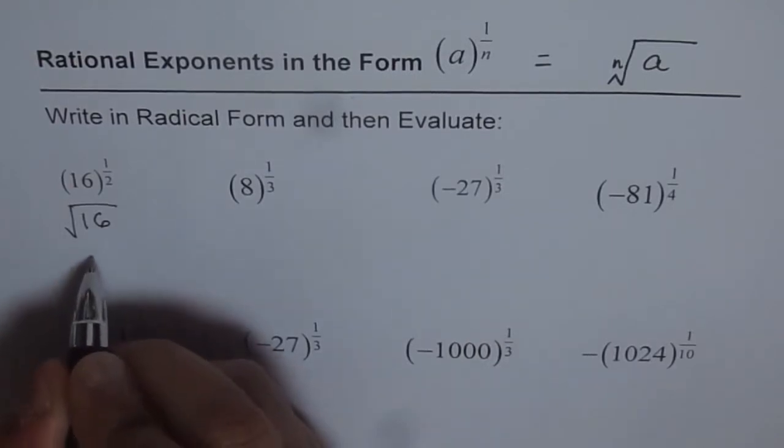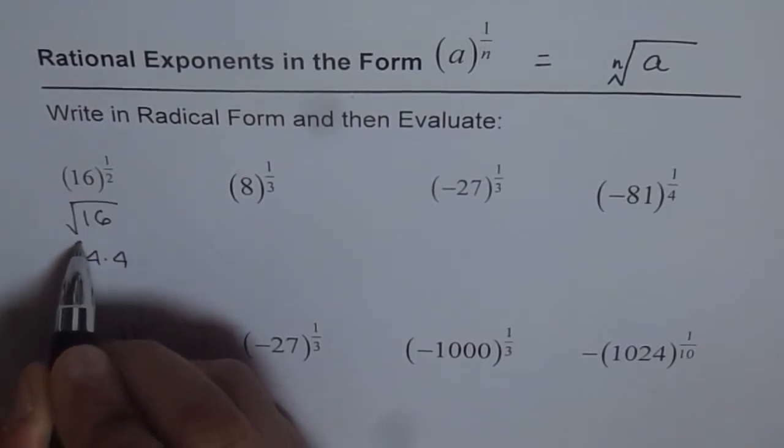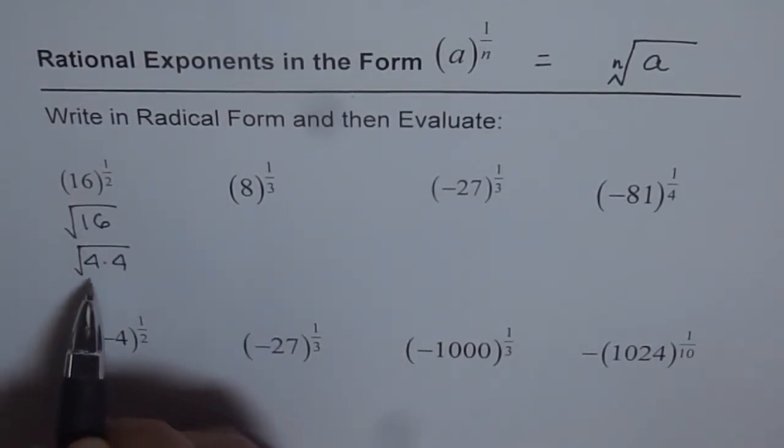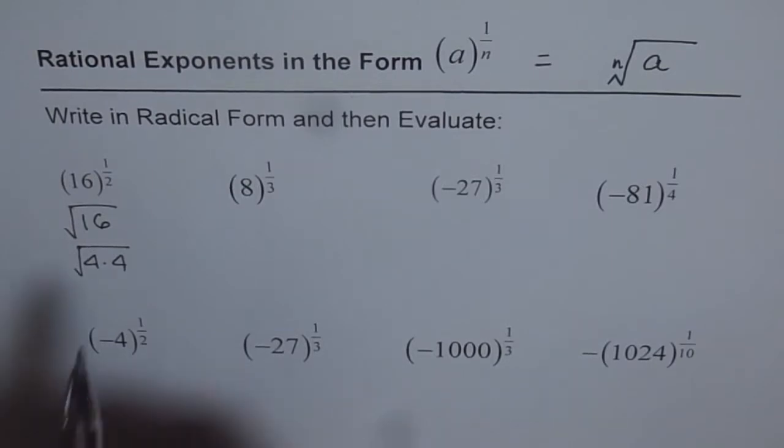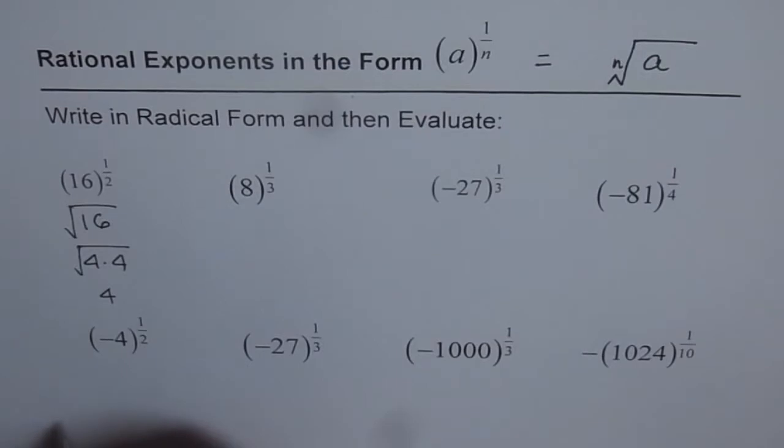Now, what is square root 16? 16 could be written as 4 times 4, or 4 squared. So, square root of 16 equals 4. While you are working on this, I suggest using a calculator to check your answers. Sometimes, if you get stuck, use a calculator to get the answer and reason out why. That will help you understand rational exponents.